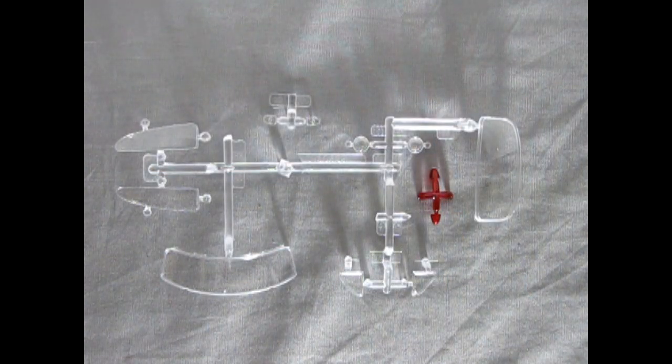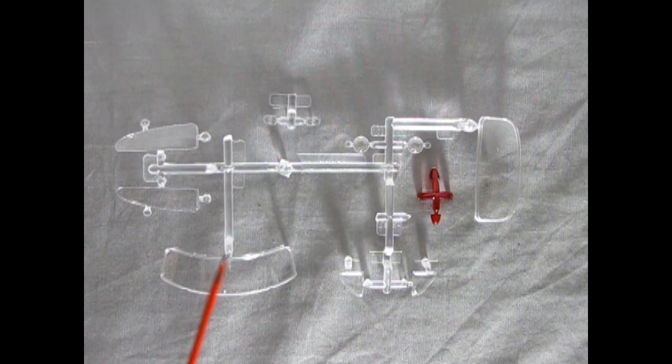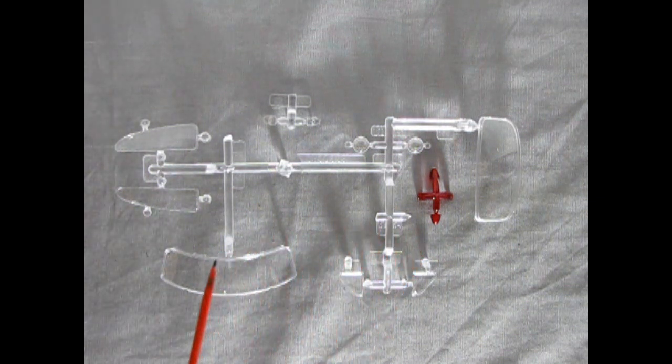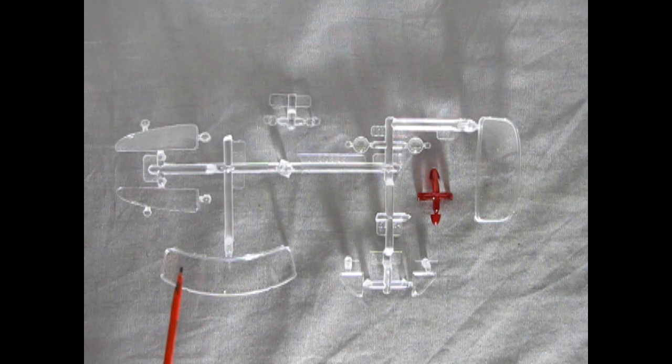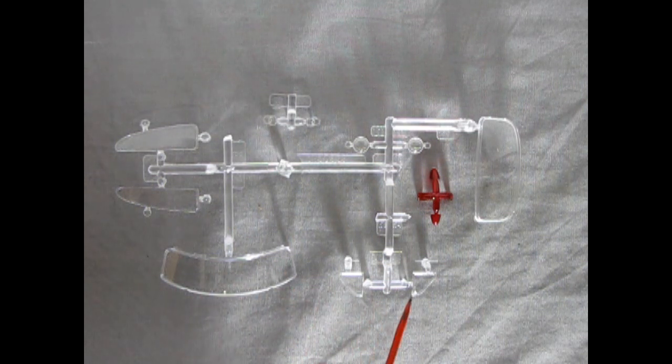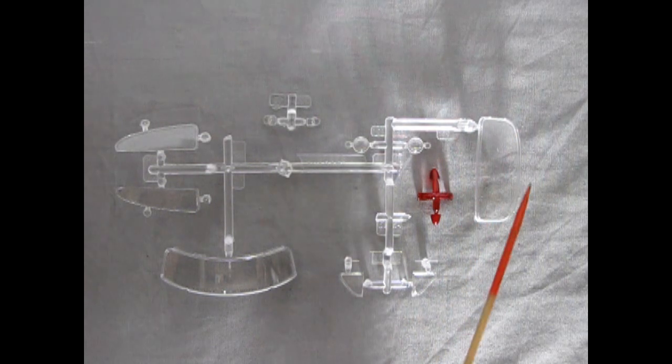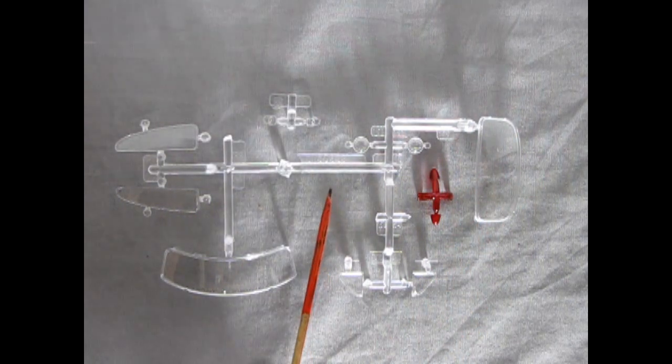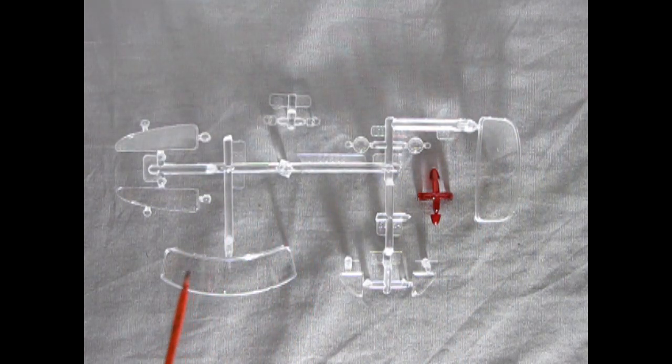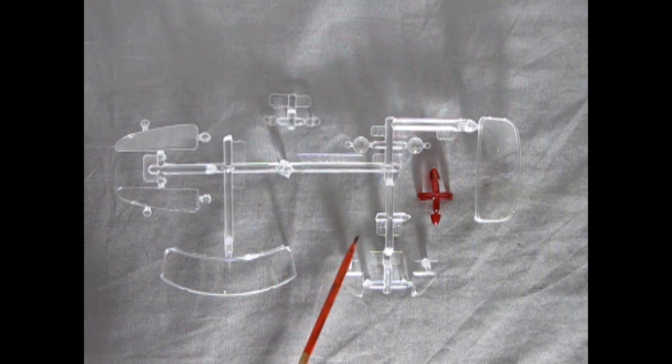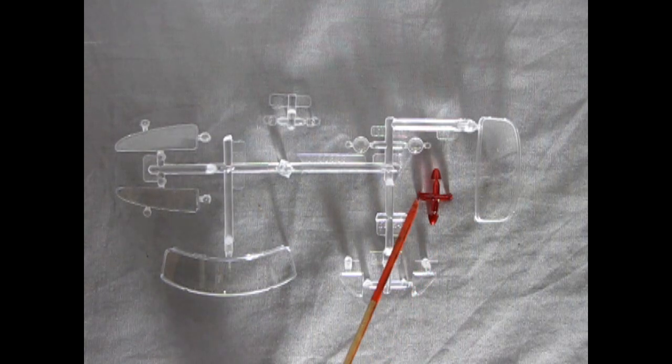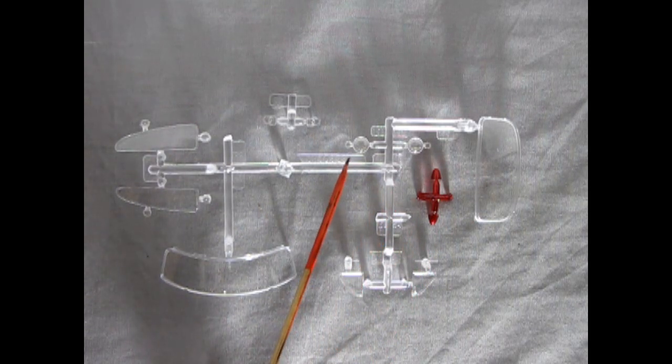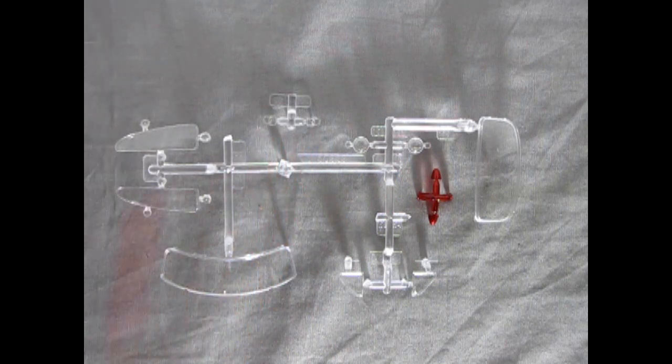Here we have all our glass components and Mobius did something a little bit different on this kit that most model manufacturers don't do. They have left a lip around each of the glass components that you can add bare metal foil onto before you put them in the body. So the actual body does not have the window trim around it. It's right on the glass. We also have our rear tail lamps which are very much like 1954 Cadillac style. And then we also have our headlights and the front turn signal lenses.